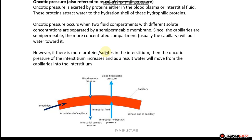Oncotic pressure, also called colloid osmotic pressure, is exerted by the proteins in either the blood plasma or in the interstitial fluid. These proteins attract water to their hydration shell. Oncotic pressure occurs when two fluid compartments — inside the capillaries and the interstitium — have different solute concentrations and are separated by a semi-permeable membrane. Since capillaries are semi-permeable, the concentrated compartment, usually the capillary, will pull water towards it into the capillaries, as demonstrated by this arrow.